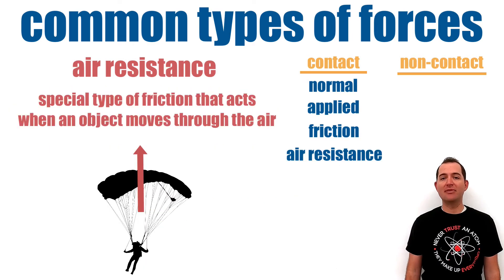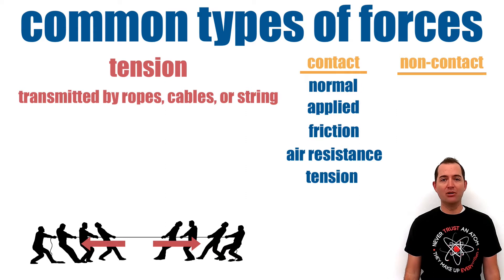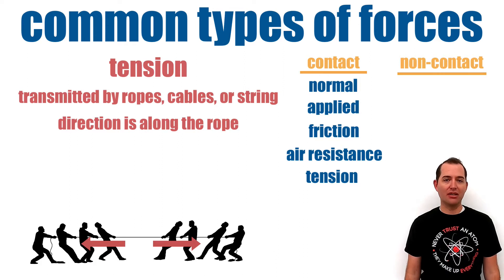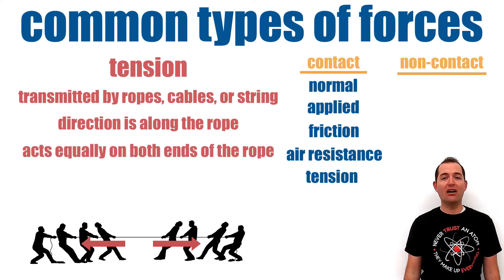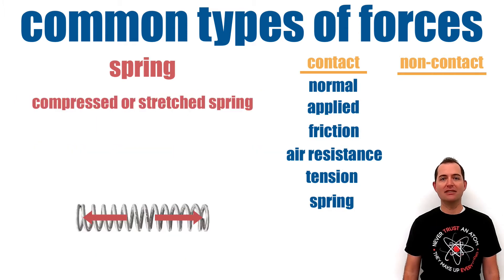Air resistance is a special type of friction that acts when an object is moving through air. Tension is a force that is transmitted by ropes, cables, or string. The direction of tension is always acting along the direction of the rope and it acts equally on objects at opposite ends of the rope. The spring force is exerted by a compressed or stretched spring.